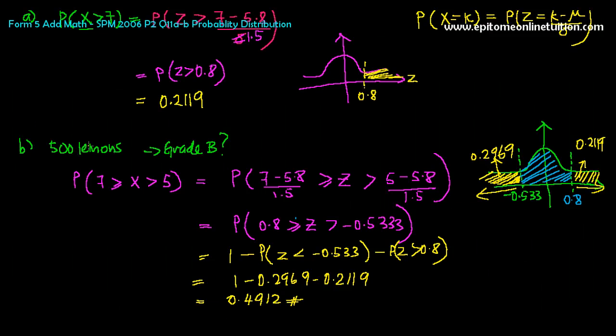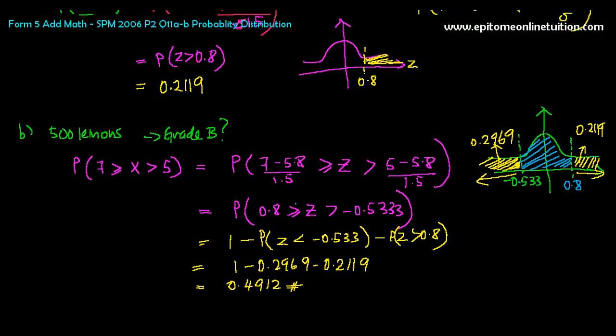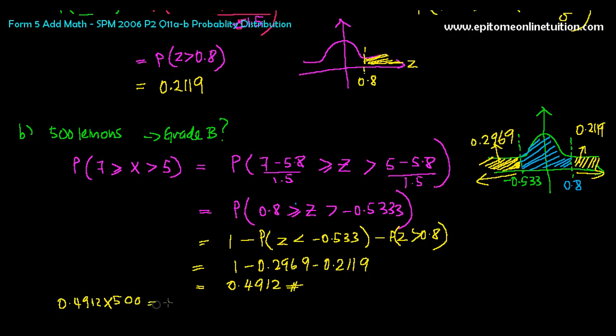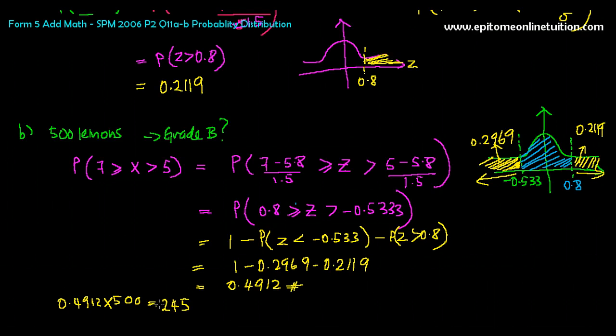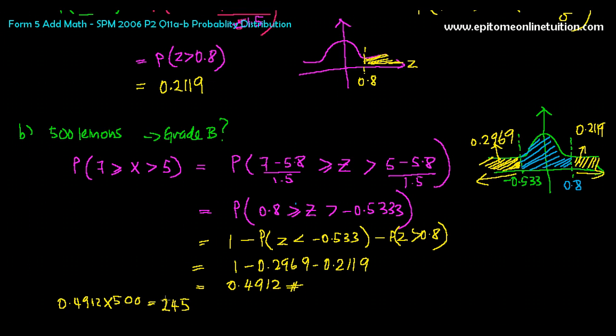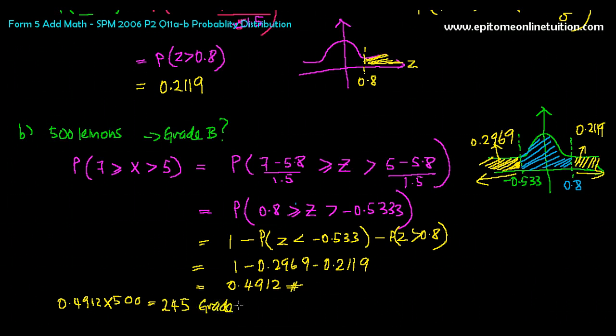So, how many grade B lemons out of the 500? So, you just do 500, so you can just take 0.4912 times 500. So, you get approximately 245. Please, round this up. Because, it's funny to put 245.5 lemon, half a lemon, you know, so that sounds a bit weird. So, what you do is, you just round it up. Let's see what you get, actually, it's 245.6, so you can say it's 245, and don't make it to 246. Why? Because you only have 245.6, so you don't have enough of 246, so round it to the lower, 245 grade B lemon.